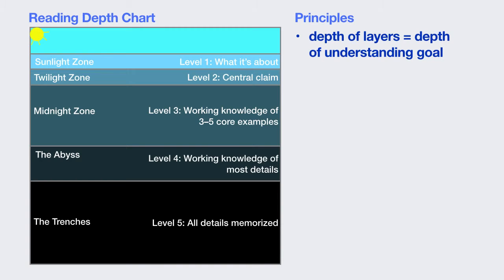Here's something very important: these levels are reached in order. If you're going diving, you don't jump straight to the abyss. You have to descend through the sunlight zone, continue through the twilight zone, and into the successive zones. You can't hop from the surface down into the midnight zone. So when you're reading, start with the level one question — what is it about? — then go to level two, level three, and so on.